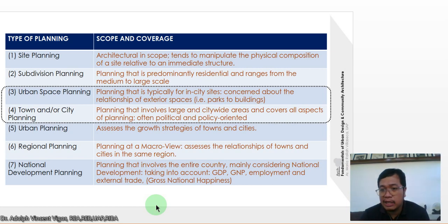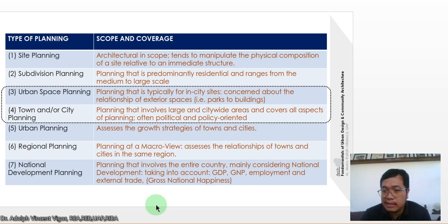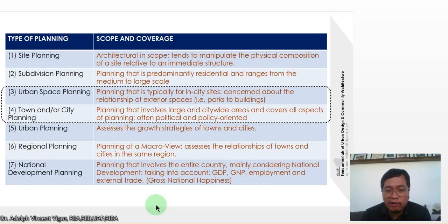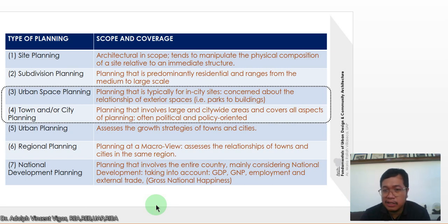Numbers three and four are the course coverage. Urban space planning is planning typically for in-city sites, concerned with the relationship of exterior spaces — for example, parks to buildings. Town or city planning involves large, city-wide areas and covers all aspects of planning, often political and policy-oriented. Urban planning, the fifth type, assesses the growth strategies of towns and cities.